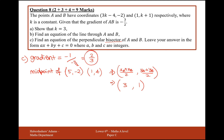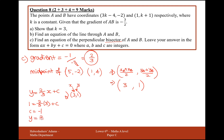We've got the gradient and the coordinate, so set up y = mx + c: y = 2/3 x + c. Plugging in the midpoint (3, 1): 1 = 2/3 × 3 + c, which gives 1 = 2 + c. So c equals minus 1. Therefore y = 2/3 x - 1.